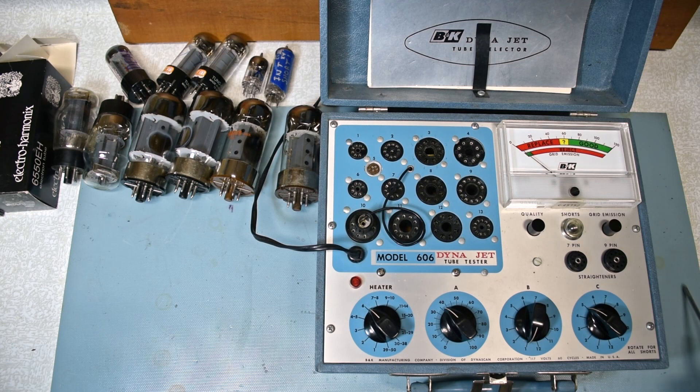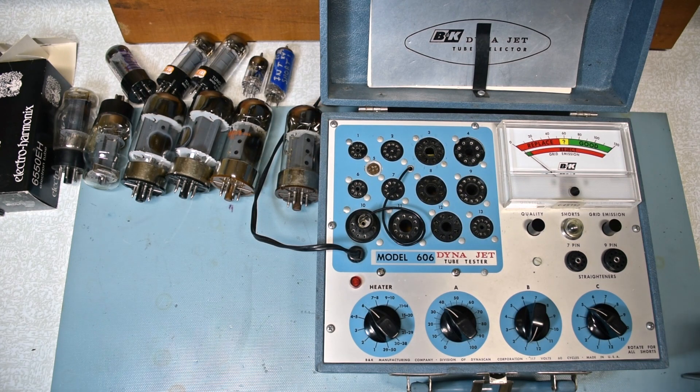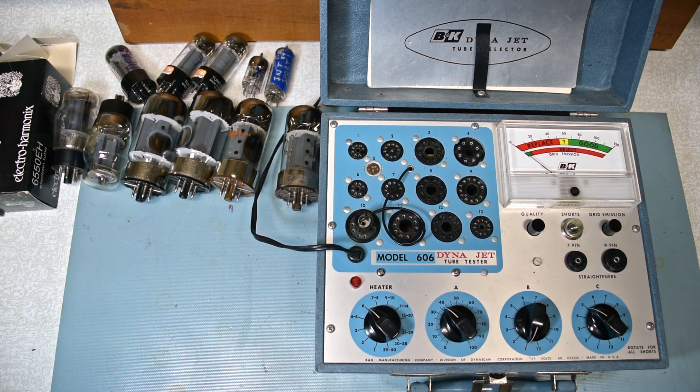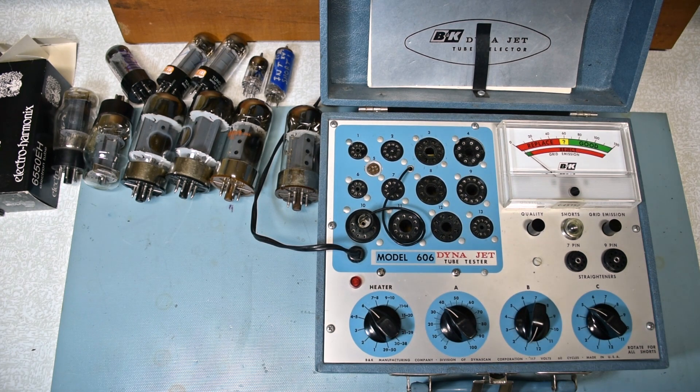This is the B&K Model 606 Dynajet tube tester. It's just a fairly basic tube tester. I'm going to go through the general operation of it and test a few tubes. I got some good ones and some known bad ones just to see if they show up as bad.